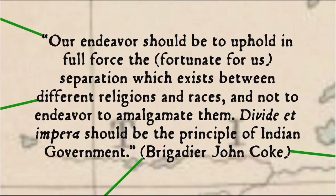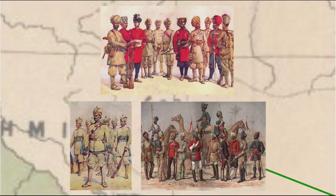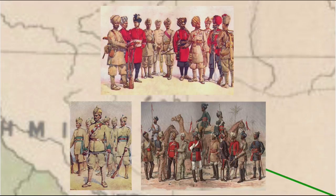This principle was explicitly adopted by the British authorities in India as expressed in several official memos and letters: 'Our endeavour should be to uphold in full force the — fortunate for us — separation which exists between different religions and races, and not to endeavour to amalgamate them. Divide et impera should be the principle of Indian government.' So in order to forestall any further army mutinies, regiments were organised along racial and religious lines — Hindu, Muslim, and so forth. In elections, divisions were maintained along religious lines as well, with separate electorates, and all these groups were played off against each other. Religious groups became politicised categories.